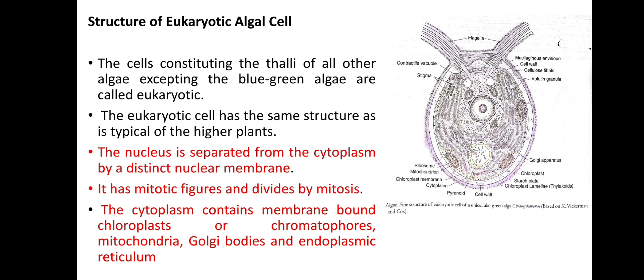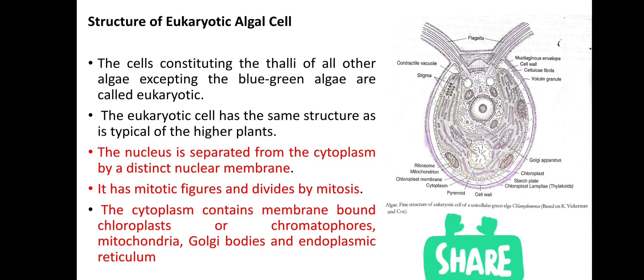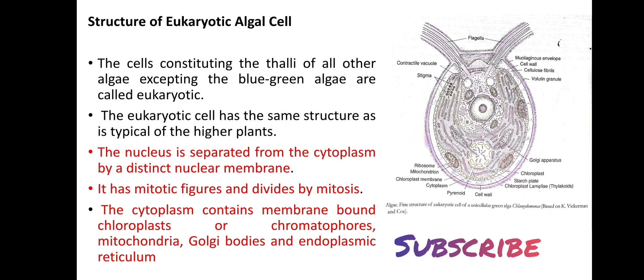Then many mitotic figures — the cell organelles which help in mitosis, that is cell division — are present, so the cells divide by mitosis. These are all the characteristic features and structures of eukaryotic and prokaryotic algal cells.